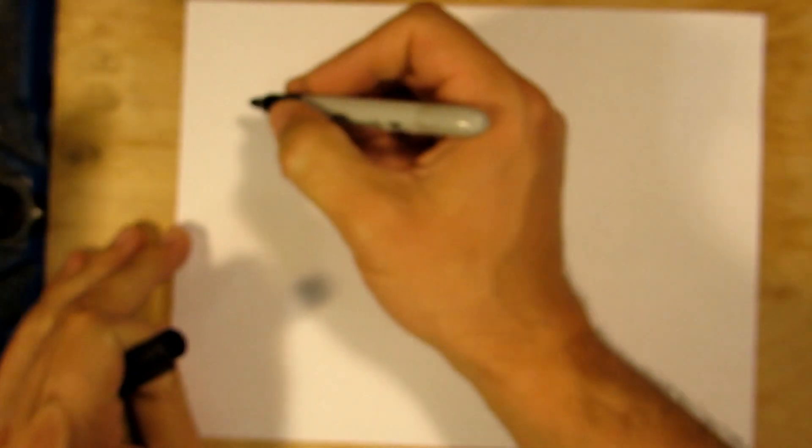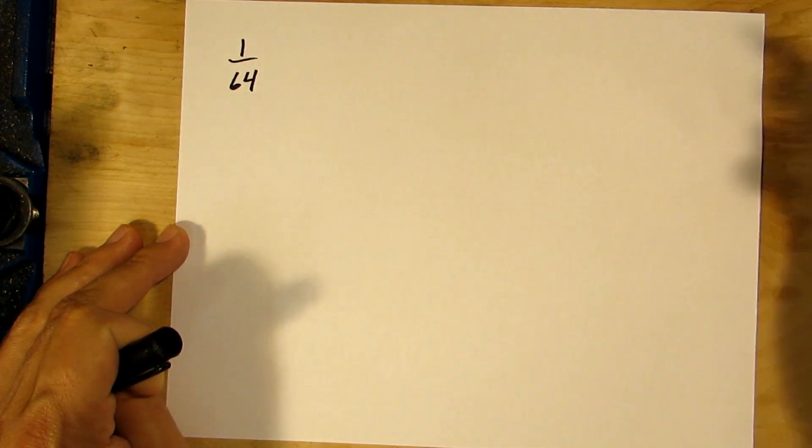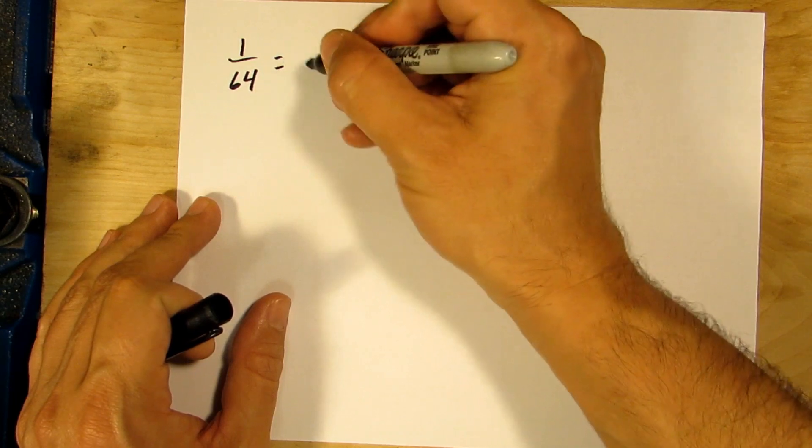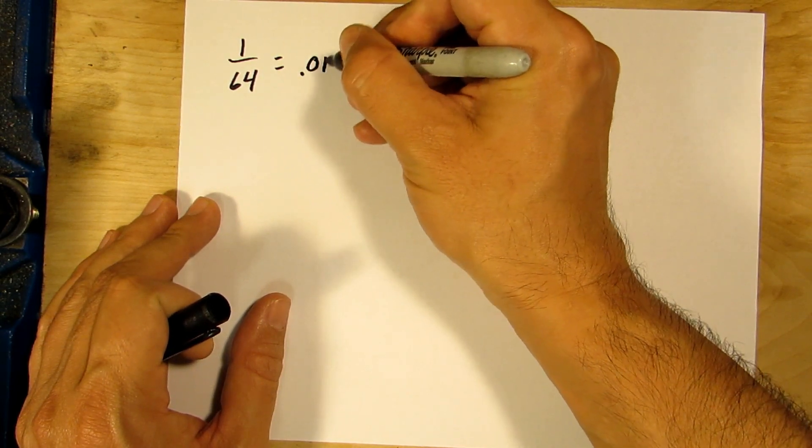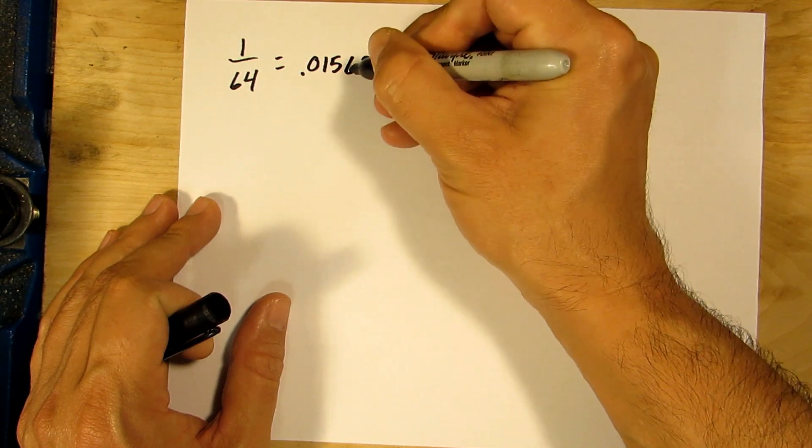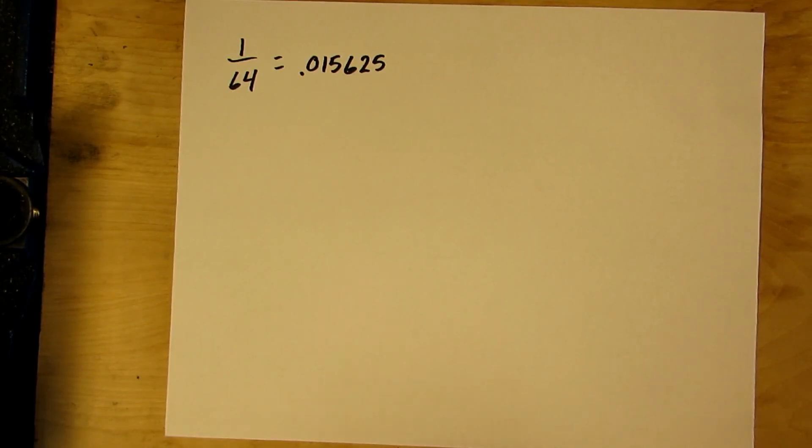The smallest fractional inch that most people would be thinking about would be one sixty-fourth of an inch. Woodworkers and stuff, that is an incredibly tight tolerance. Well that equals 0.015625, so between fifteen and sixteen thousandths of an inch. Now that's a pretty big number in the machining world.